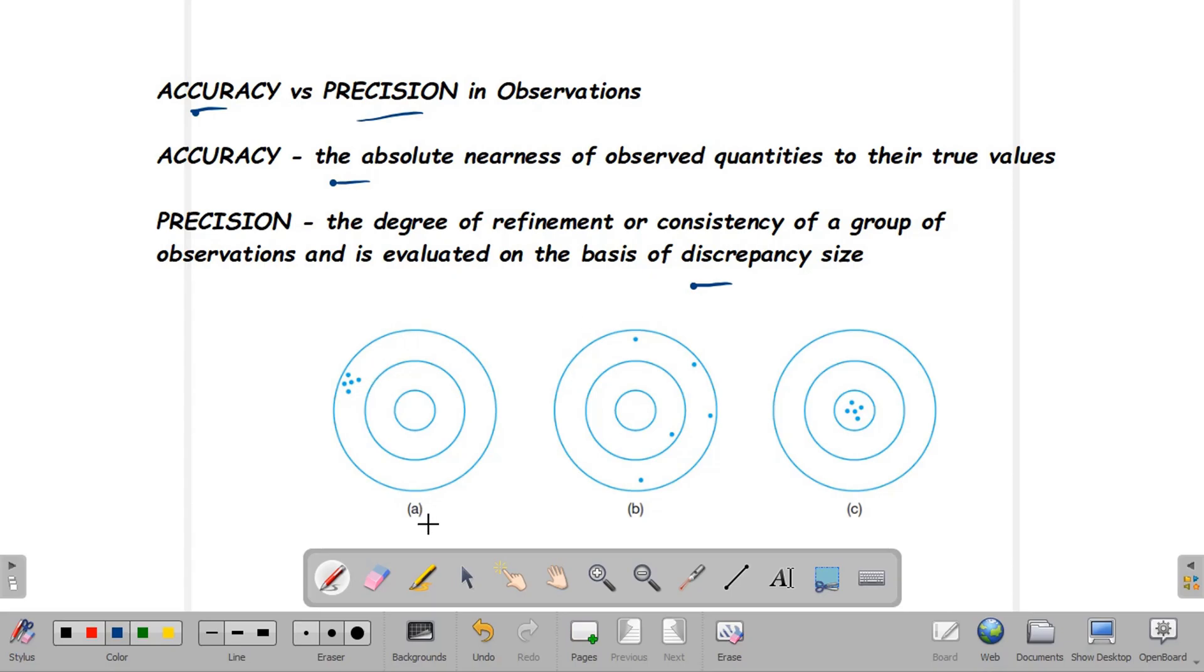For diagram A in this figure, the observed values are actually precise, but they're not accurate. Assuming that this is a target and the center is the bull's eye, if you observe here, the values are actually close to each other.